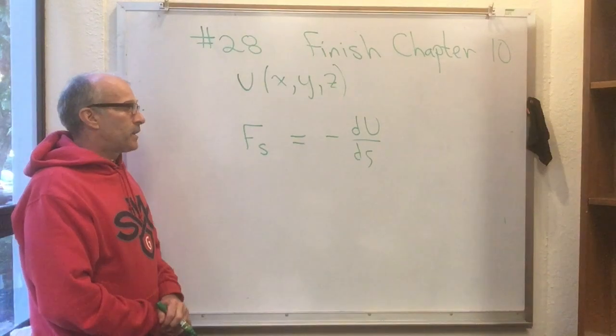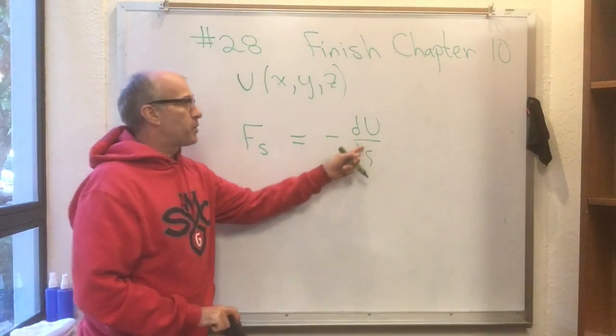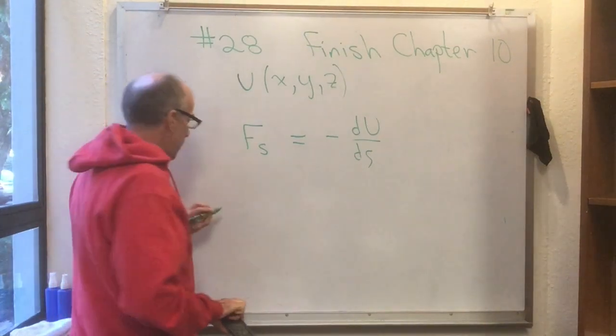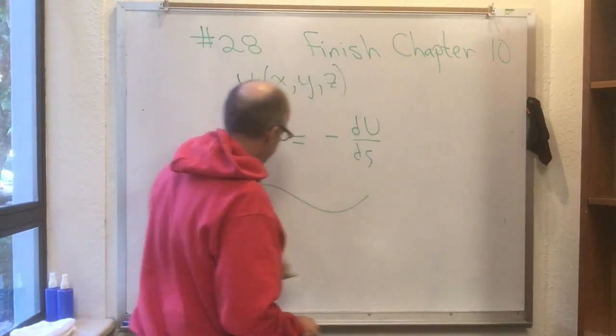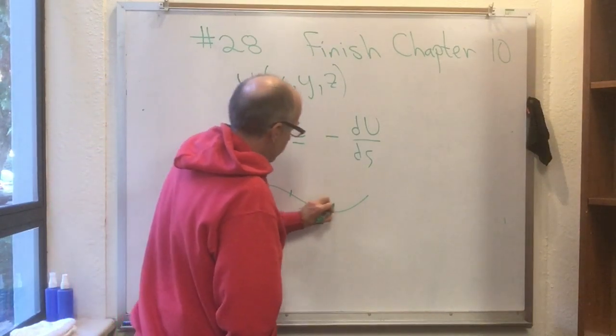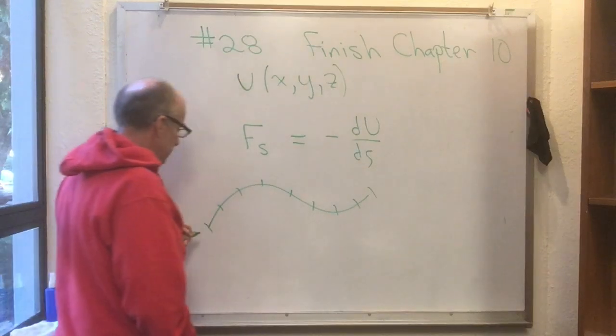Because this tells you how to get the change in U with respect to S in any direction. I'll show you. If I have a path and it goes 0, 1, 2, 3, 4, 5, 6, 7, 8 meters, so there's 0 meters, 1, 2, 3 meters, 4, 5, 6, 7, 8 meters,